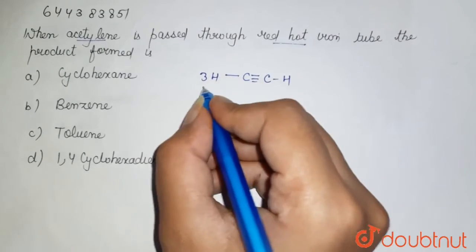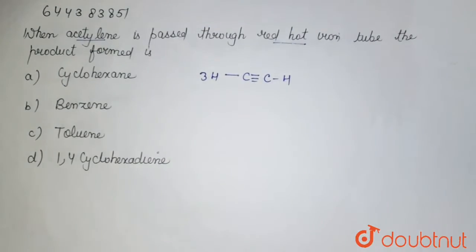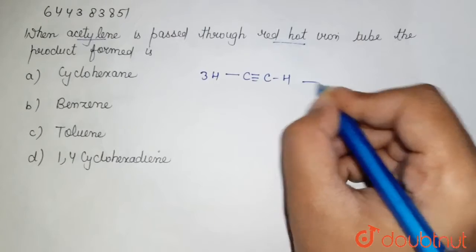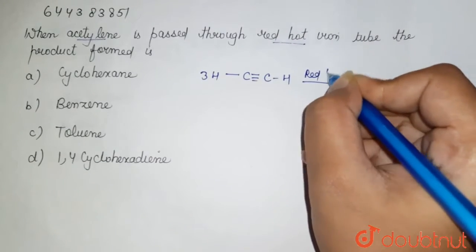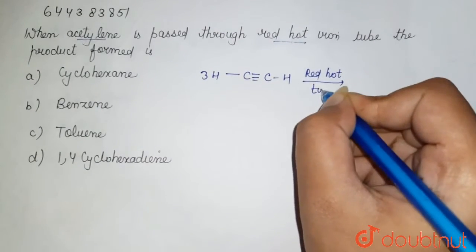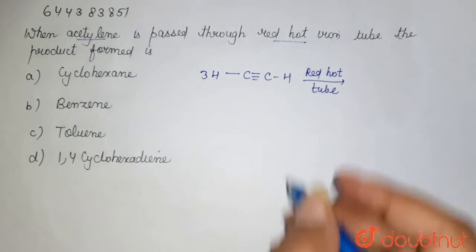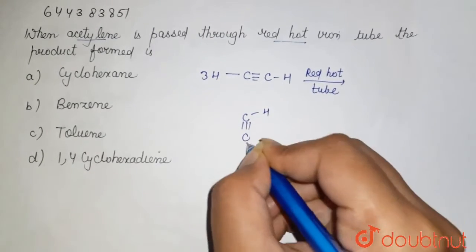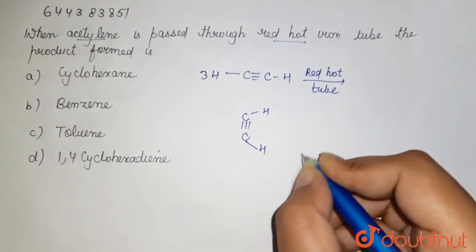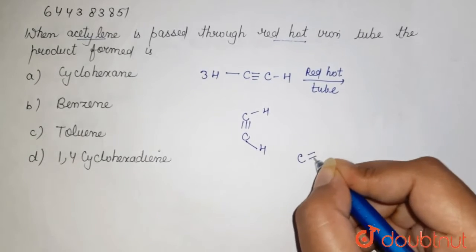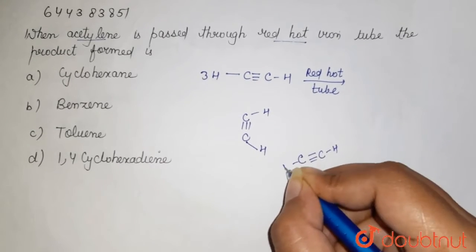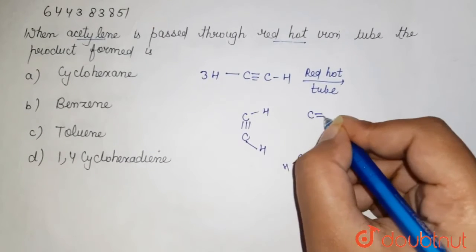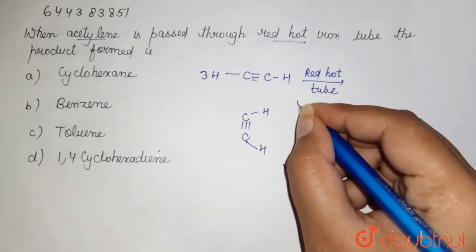I am taking three molecules because this is a memory-based reaction. So here in the presence of your red hot tube, what happens - these three molecules collect like this. Here it is one hydrogen, here it is one hydrogen, that is one molecule. Second, it is like this and third like this.